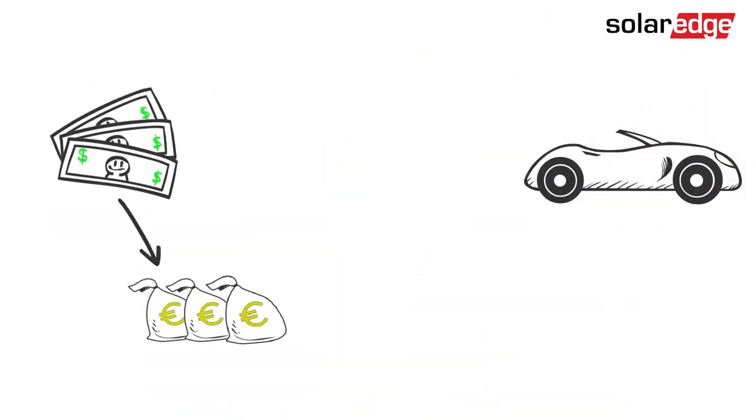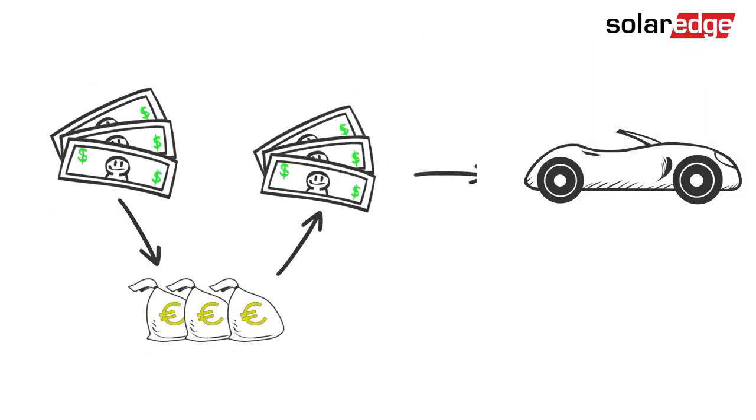To put it another way, let's say you want to buy a car. But first, you have to convert your money to another currency, and then back to your own currency to make the purchase. Not very efficient, right? That's what happens with AC coupling.